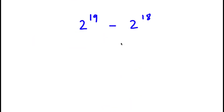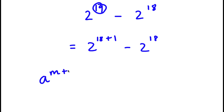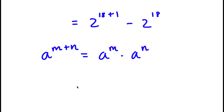In this problem I have 2 to the power of 19 minus 2 to the power of 18. To solve this, I'm going to start by rewriting 19 as 18 plus 1. So now I have 2 to the power of 18 plus 1 minus 2 to the power of 18. Since a to the power of m plus n equals a to the power of m times a to the power of n, I'll rewrite 2 to the power of 18 plus 1 as 2 to the power of 18 times 2 to the power of 1, minus 2 to the power of 18.